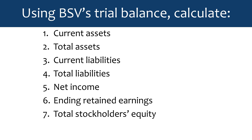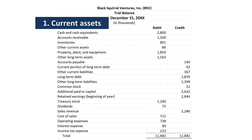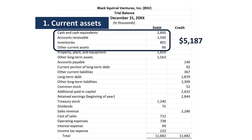Now we are going to use this trial balance to calculate some numbers: current assets, total assets, current liabilities, total liabilities, net income, ending retained earnings, and total stockholders' equity. Let's calculate Black Squirrel's current assets. We're going to add cash and cash equivalents, accounts receivable, inventories, and other current assets — those are the current assets — so we add those up and get that total.